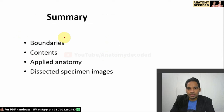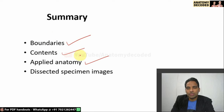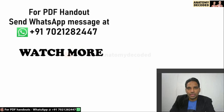In summary, we covered the boundaries of femoral triangle, enumerated its contents, and reviewed details of the femoral artery and femoral nerve. In applied anatomy, we learned about femoral hernia and the sites of the femoral artery and femoral nerve for clinical procedures. Dissected specimen images were also shown. A PDF handout is available by WhatsApp, and please watch other sessions on this YouTube channel.